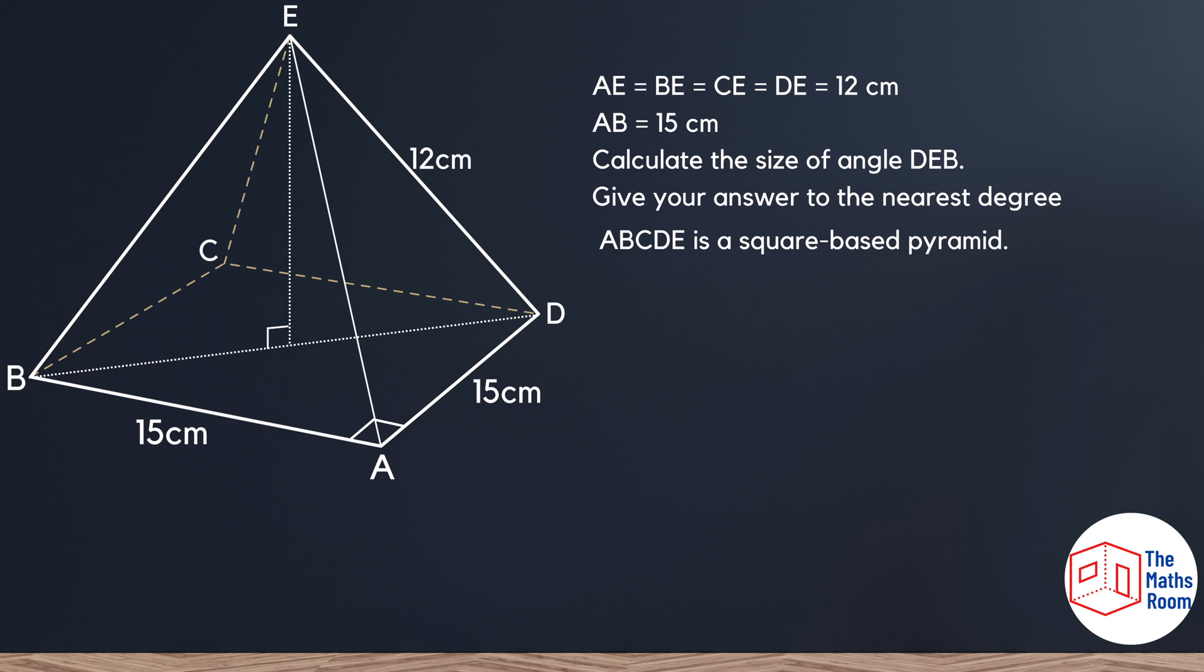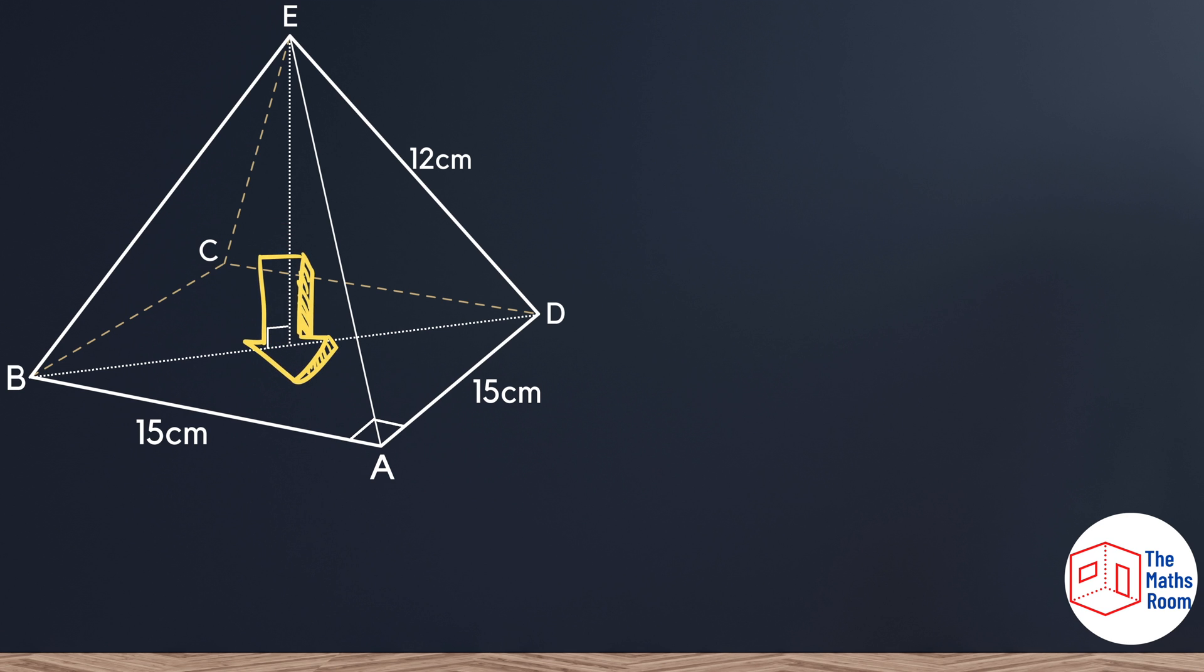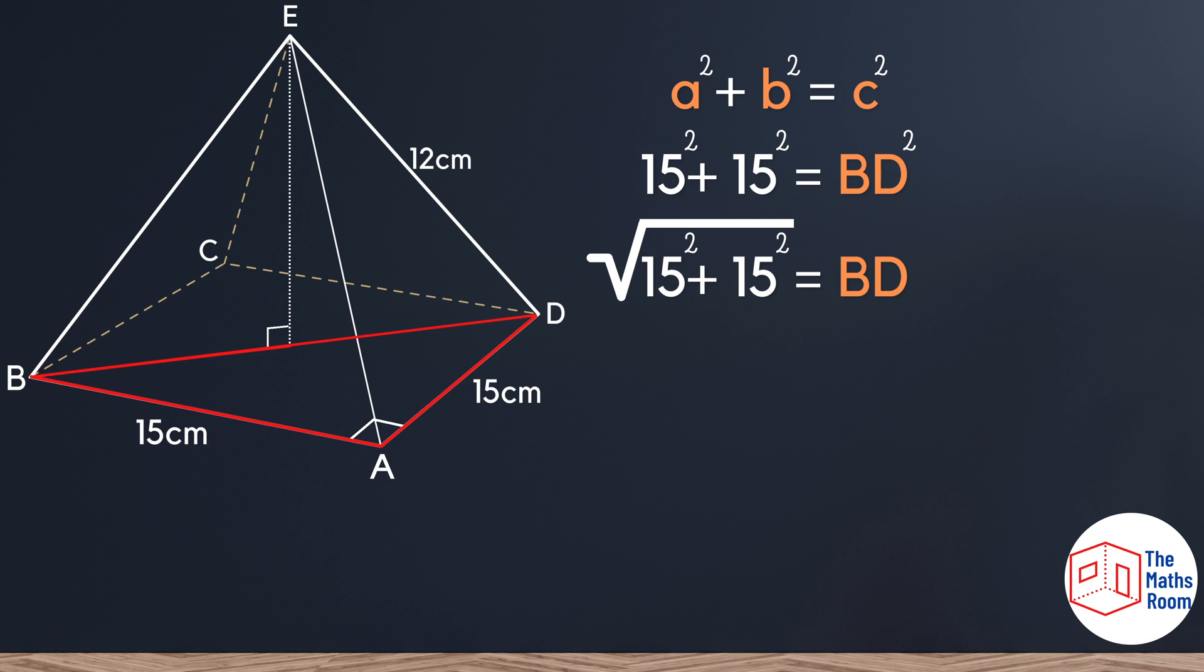Changing our perspective and looking from the top down, we can see this forms a right-angled triangle. As soon as we see right-angled triangles, we know we can use Pythagoras. We've got AB and AD. We're going to square both of those, add them together, and then square root that answer to give us the length of BD.